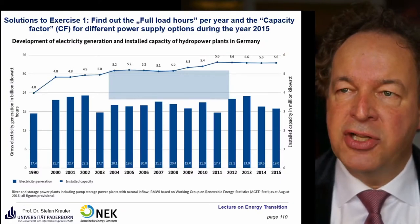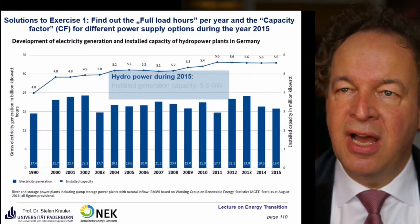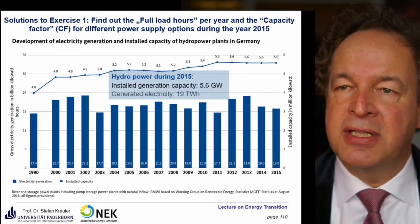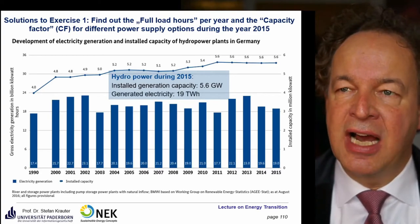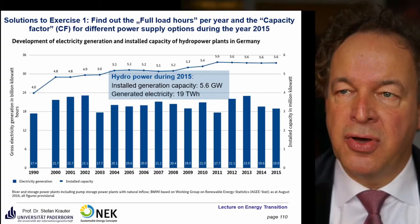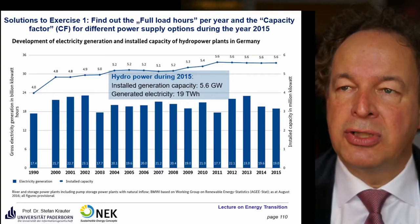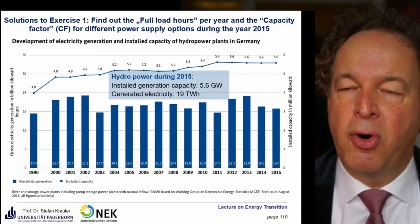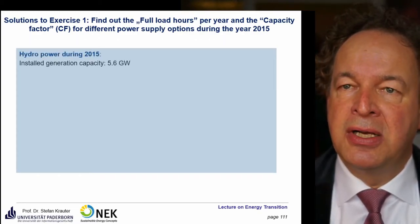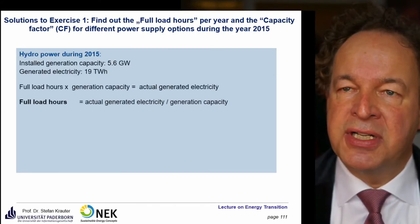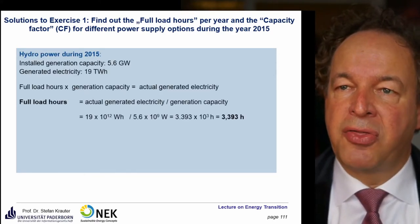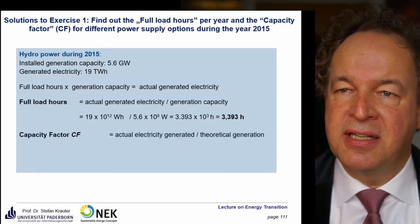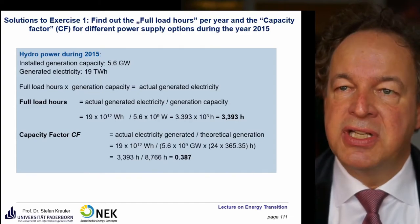Last but not least, hydropower. We have here an installed capacity of only 5.6 gigawatt and a generation of 19 terawatt hours. That's not only stored hydropower — it's also flowing river hydropower, so the capacity factor is not 1, much less. The full load hours are 3,393 hours, and the capacity factor is 0.387.